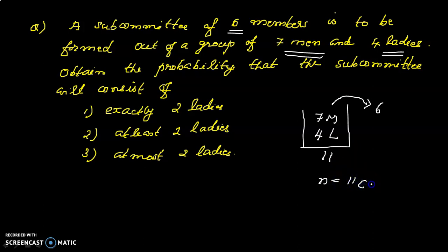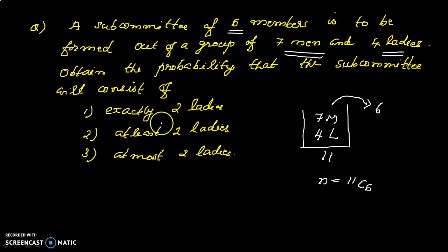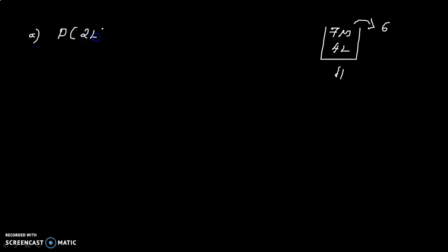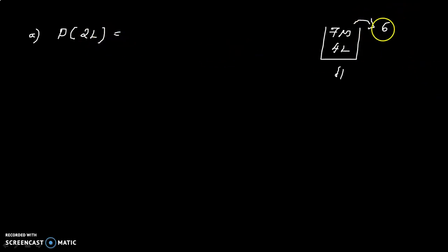The total number of ways to select six members from eleven is 11C6. Now let's talk about the first question: what is the probability that the committee will consist of exactly two ladies? The probability of getting exactly two ladies in the committee — we have six different committee members to fill.